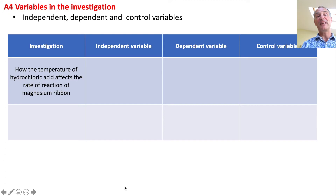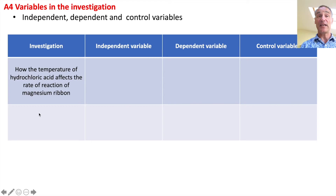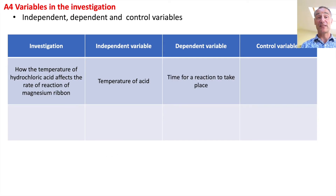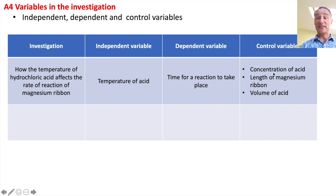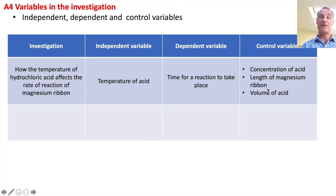Pause the video and work out what you think the independent, dependent and control variables are for this investigation, then I'll go through. The independent variable is the temperature. The dependent variable is the time for the reaction to take place. The control variables are: the concentration of acid (which affects how fast it reacts), the length of magnesium ribbon (which also affects rate), and the volume of acid. You could also have mentioned the mass of ribbon and the surface area.